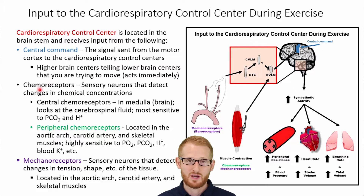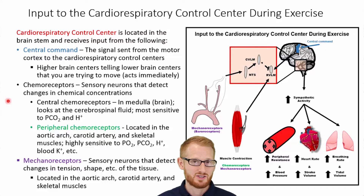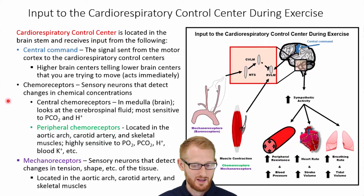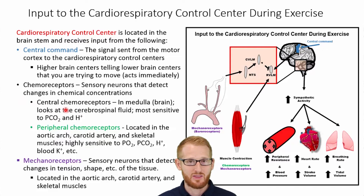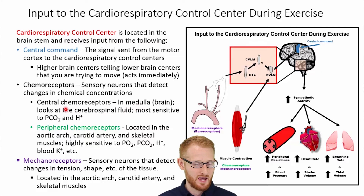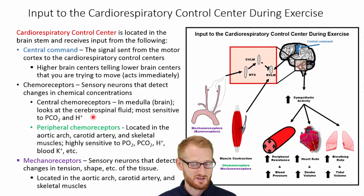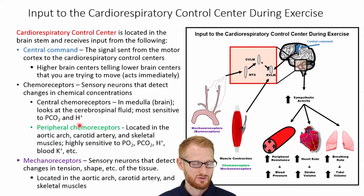We also have chemoreceptors, which are essentially sensory neurons that sense changes in oxygen, changes in CO2, as well as changes in hydrogen ions or acid levels. These can be centrally located — meaning inside the brain itself. The brain has many of these chemoreceptors, especially inside the medulla, and they are sensitive to O2 changes, CO2 changes, and hydrogen changes, but are most sensitive to CO2 and hydrogen.